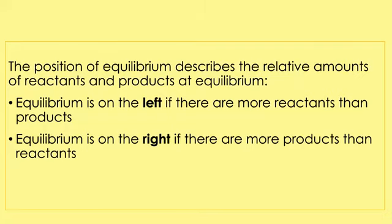The position of equilibrium is something that's quite difficult to get your head around, but it just describes the relative amounts of reactants and products at equilibrium. Remember, reactants are on the left-hand side of the chemical equation and products are on the right-hand side. So if the equilibrium is on the left, we have more reactants than products, and if it's on the right, there are more products than reactants.